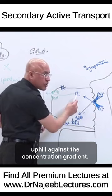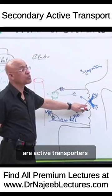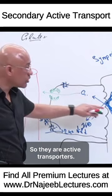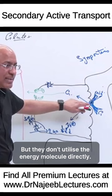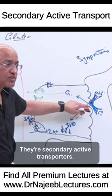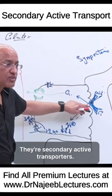SGLT are actually active transporters — they are moving glucose against the concentration gradient. But they don't utilize the energy molecule directly; they don't break down ATP. So they are not primary active transporters. They are secondary active transporters because the active transport by SGLT depends on the active transporter mechanism of sodium-potassium ATPases.